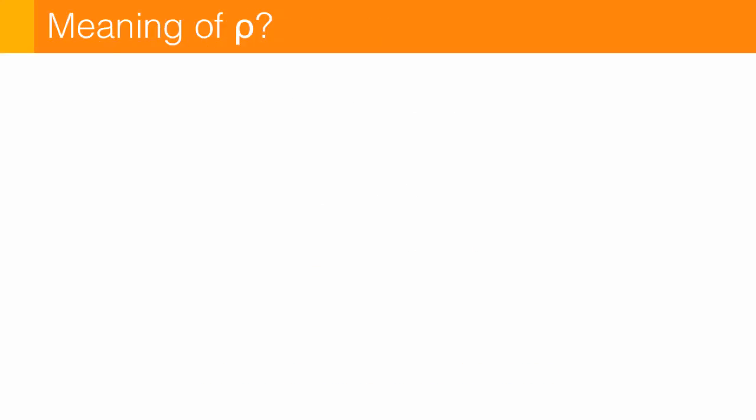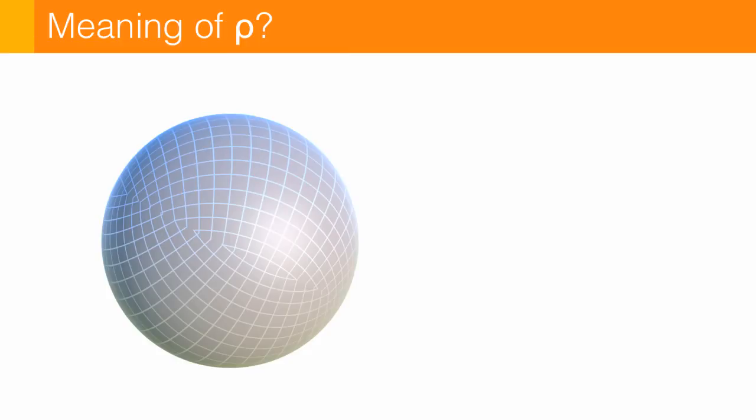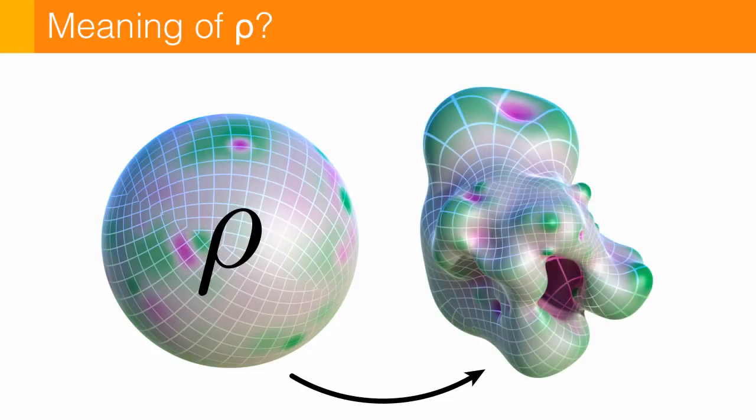So for instance, if I have this sphere, and I paint on a function rho that looks like this, so green is positive and pink is negative, then I end up with a surface that looks like this: green spots bulge out, and pink spots bulge in. And the longer story here is just that rho controls the change in curvature as we go from one surface to the other.